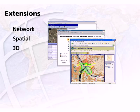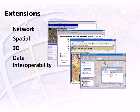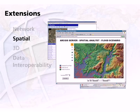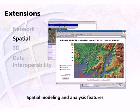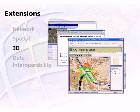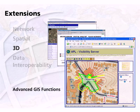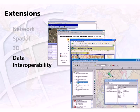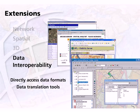ArcGIS Server extensions help you add capabilities to your applications. Use the Network extension to add network-based spatial analysis capabilities. Use the Spatial extension to add a broad range of powerful spatial modeling and analysis features. Use the 3D extension to add advanced GIS functions for three-dimensional modeling. Use the Data Interoperability extension to directly access hundreds of data formats and data translation tools. This extension also brings spatial extract, transform, and load capabilities to custom server applications via the geoprocessing framework.